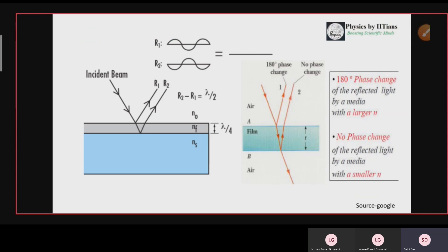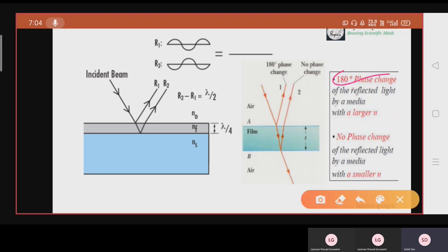Now we will understand the basic principle behind the working of the anti-reflection coating. We have to keep in mind that 180 degree phase change will happen if the reflected light will be from a medium of a larger n, and there is no phase change when the reflected light by a media with smaller n.